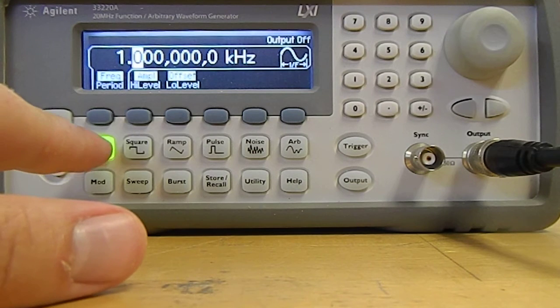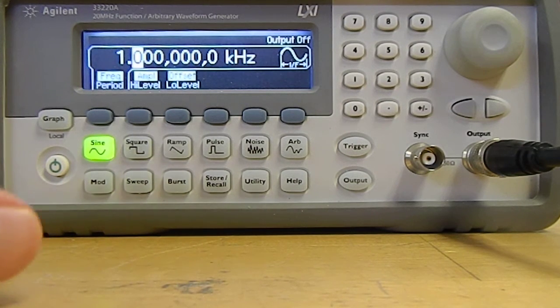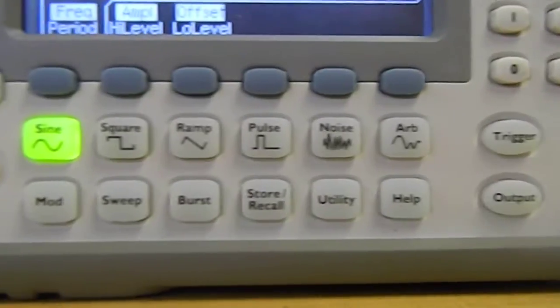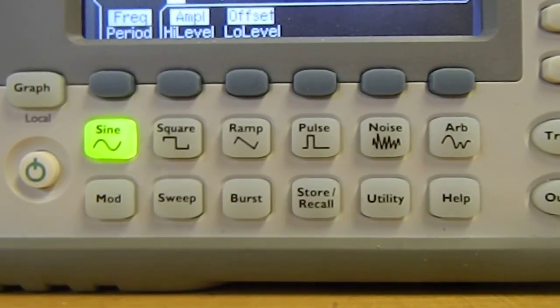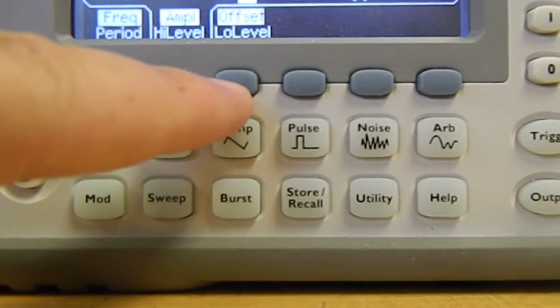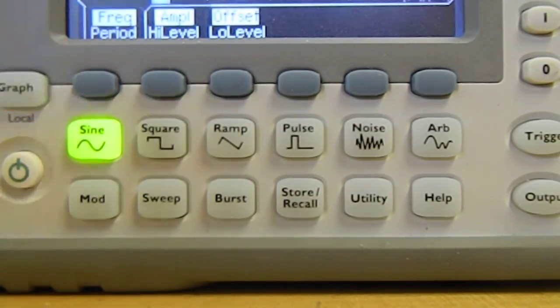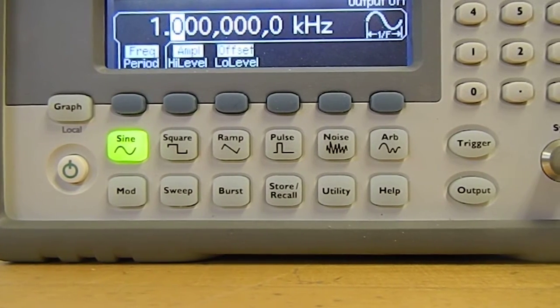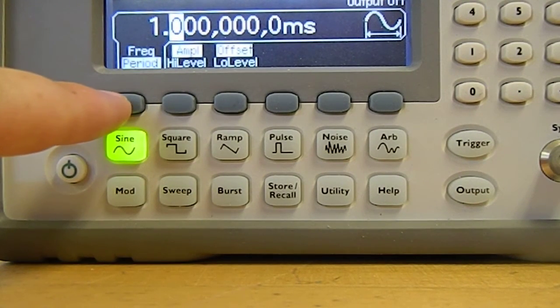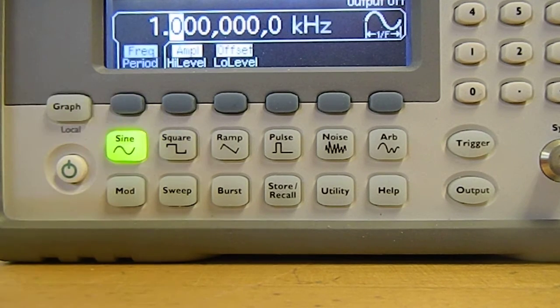Alright, so let's start with a sine wave, and then if we want to change characteristics of the sine wave, what we would do is use these blue soft keys corresponding to things going on on the screen. So you can see that there's frequency, amplitude, and offset. For frequency, you simply click on frequency. If you click it again, it allows you to set the period rather than the frequency, but we'll stick with frequency.